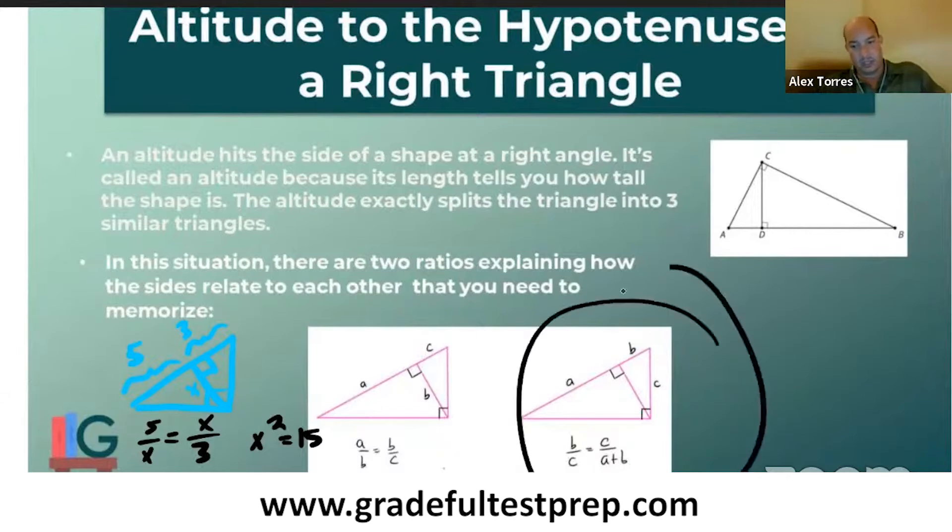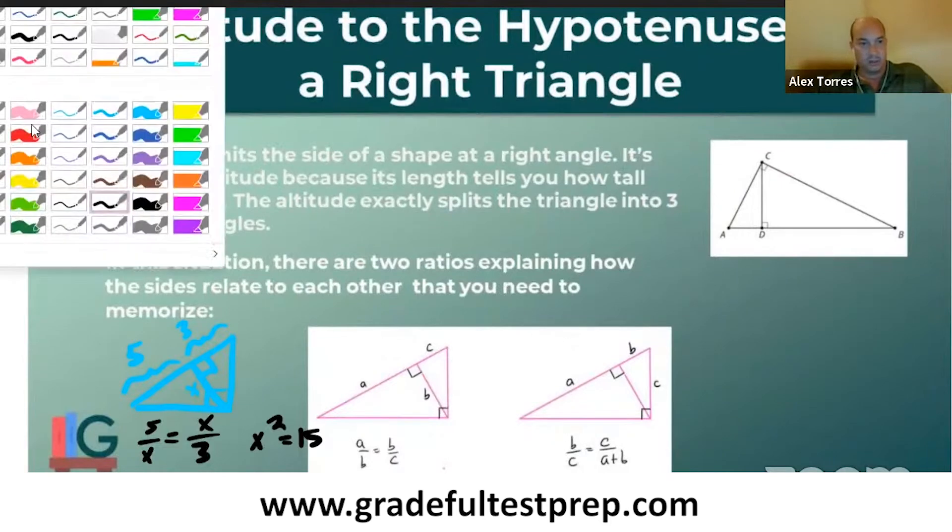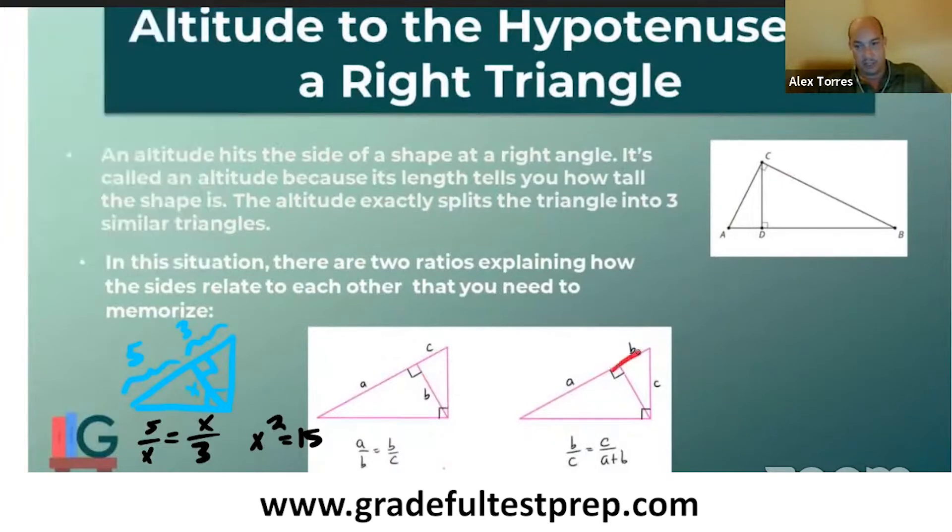Now, this one here is a little bit more complicated, but still doable. As opposed to a caterpillar, this one you could think of maybe a Nike swoosh, and the order of the ratio goes like this: B over C equals C over A plus B. So you see the little sort of Nike swoosh in there, and if we had an example of that...